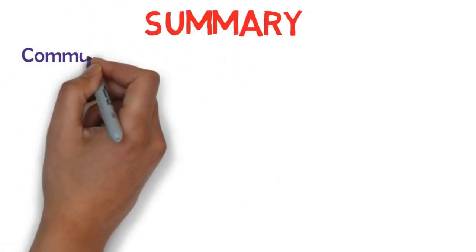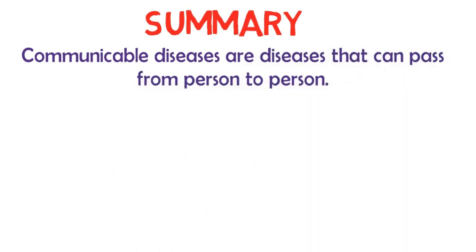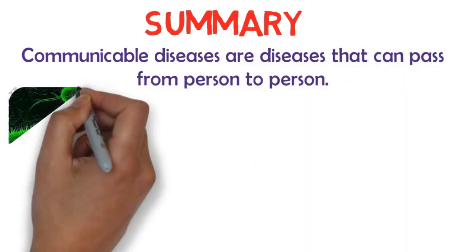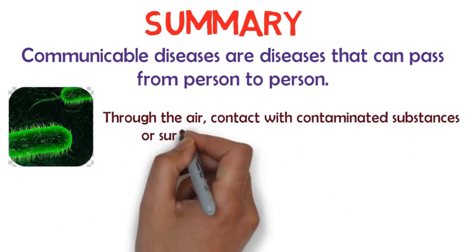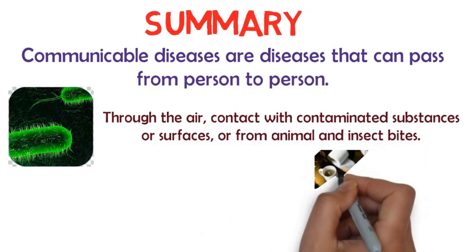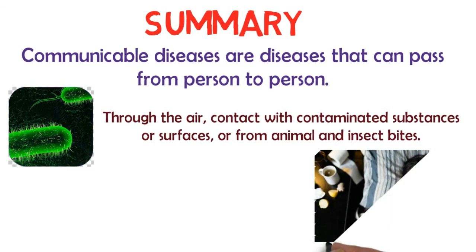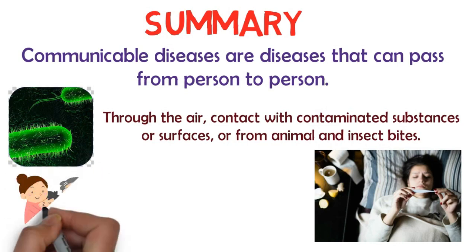In summary, communicable diseases are diseases that can spread from person to person. The pathogens that cause these diseases can spread in various ways, such as through the air, contact with contaminated substances or surfaces, or from animal and insect bites. Many communicable diseases cause mild symptoms that go away without treatment, while others require treatment to prevent them from becoming more serious.